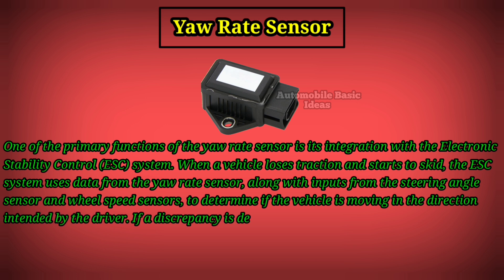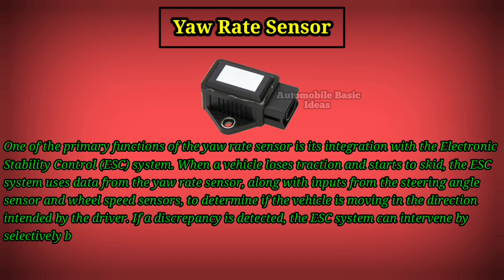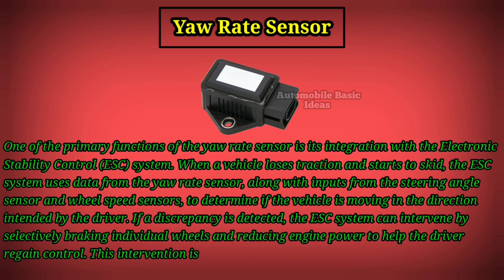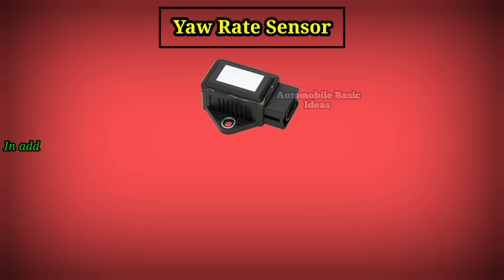If a discrepancy is detected, the ESC system can intervene by selectively braking individual wheels and reducing engine power to help the driver regain control. This intervention is crucial in preventing accidents caused by oversteer or understeer.